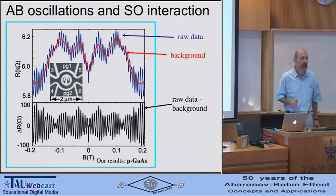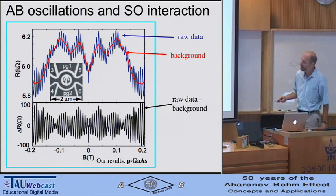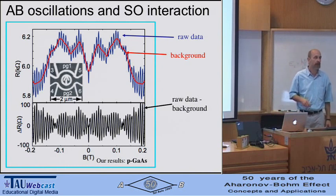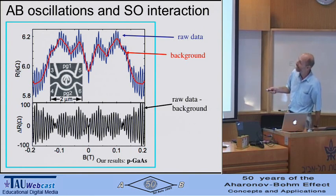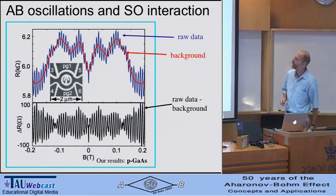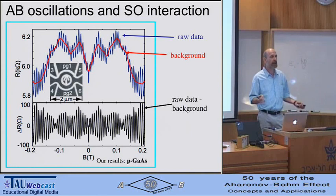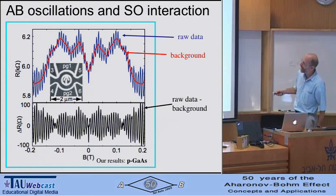Here is an example using P-type gallium arsenide—very similar to high-mobility electron gases, except P-doped instead of N-doped. The mobilities are so high that these samples are good enough for fractional quantum Hall experiments. You see the raw data: the black area is where the holes may reside, and the white areas represent barriers so carriers can come from the left, penetrate the ring-like area, and exit to the right. The raw data is the blue trace; if you subtract the red background—which has a classical origin due to the sample geometry—you get the black trace.